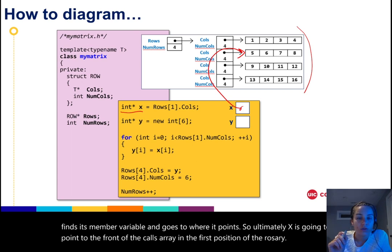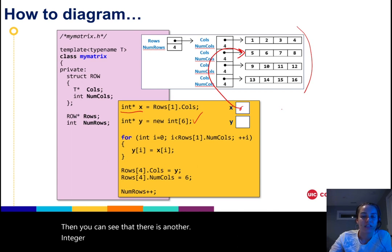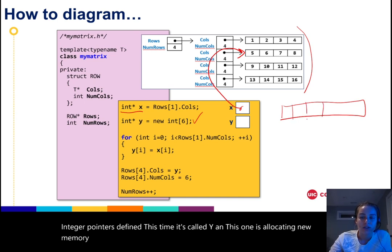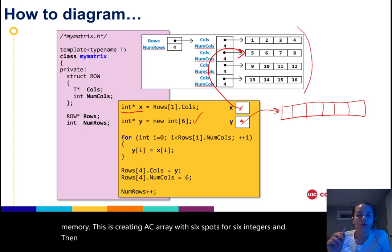Then you can see that there is another integer pointer defined. This time it's called y, and this one is allocating new memory. This is creating a C array with six spots for six integers, and then y will point to that newly allocated memory.